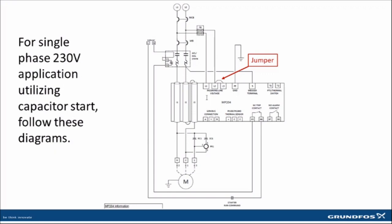And in a 230-volt single-phase, we would utilize L1, L2, and then jump to L3. So L2 would jump to L3.